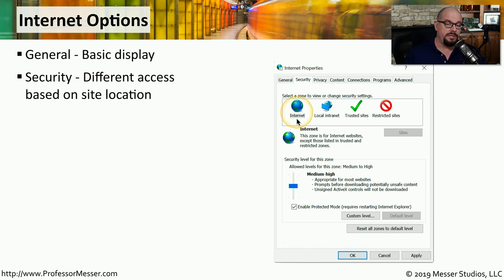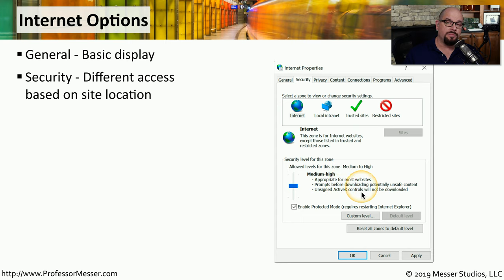There are four different categories in the Security tab: the Internet category, the local intranet, trusted sites, and restricted sites. You can customize or change the level of access you would have to different sites, depending on where those sites are located.